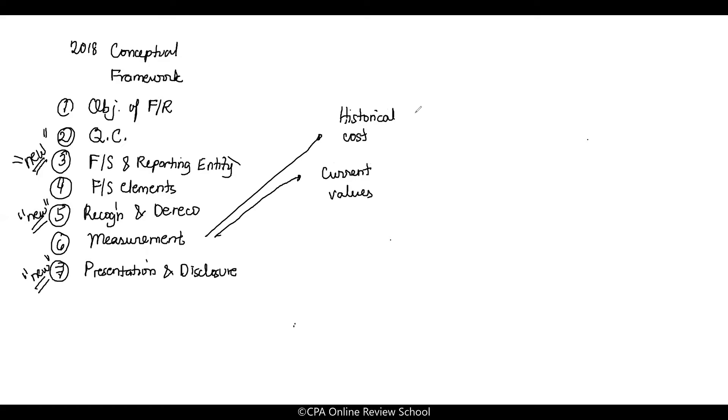So what is historical costs? It refers to the price of a transaction that gave rise to the item measured. This is the amount basis upon the recognition of that asset. That's what historical costs means.